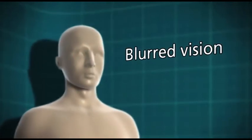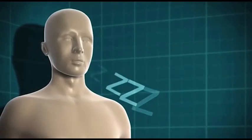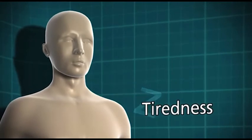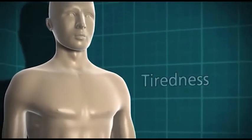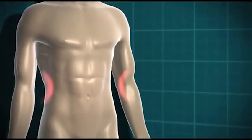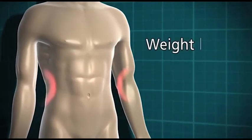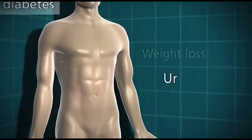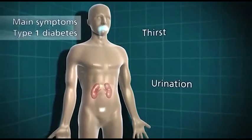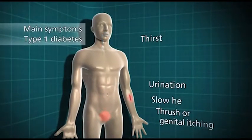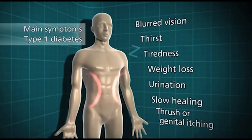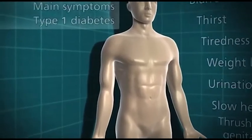Because the glucose can't get into the cells to be used for energy, somebody with undiagnosed type 1 diabetes is going to start feeling very tired, lethargic and unable to go about their normal daily routine. The body still needs an energy source, so it starts to break down its fat stores, which can lead to weight loss. The main symptoms of type 1 diabetes are: going to the toilet a lot, thirst, thrush or genital itching, slow healing of wounds, blurred vision, tiredness and weight loss. These symptoms generally happen quite quickly, often over a few weeks, and can be reversed once the diabetes is treated with insulin.